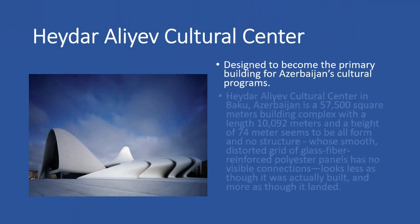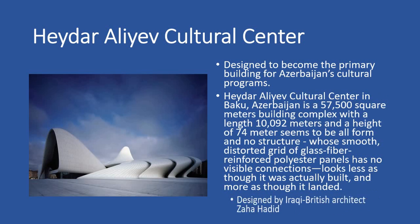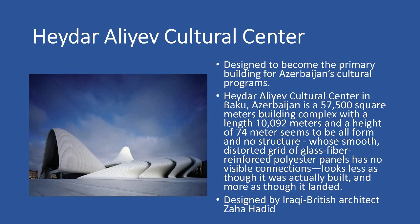My name is Pian Destaho. Going outside the country, one example of an engineering structure is the Heydar Aliyev Cultural Center, designed by Iraqi-British architect Zaha Hadid. This cultural center in Baku, Azerbaijan is a 57,500-square-meter building complex with a length of 10,092 meters and a height of 74 meters. It seems to be all form and no structure — smooth, distorted cladding of glass fiber-reinforced polyester panels with no visible connections. It looks less as though it was built and more as though it landed. The Heydar Aliyev Cultural Center was designed to become the primary building for Azerbaijan's cultural programs.